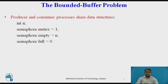The producer-consumer process shares the following data structure: integer n, semaphore mutex with value assigned to 1, semaphore empty assigned to n, and semaphore full assigned to 0. We assume that the pool consists of n buffers, each capable of holding one item. The mutex semaphore provides mutual exclusion for accesses to the buffer pool and is initialized to 1. The empty and full semaphores count the number of empty and full buffers. The semaphore empty is initialized to n and the semaphore full is initialized to 0.